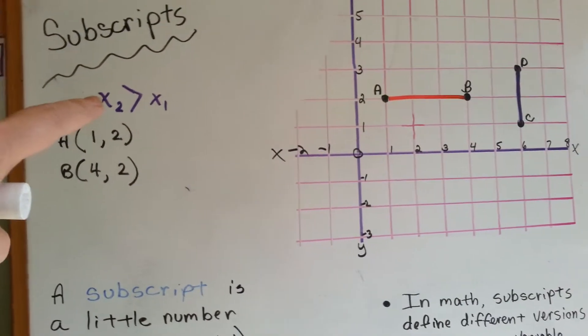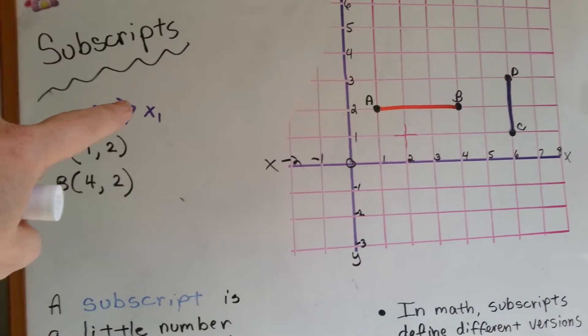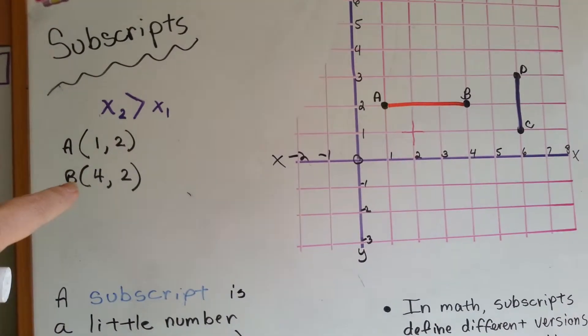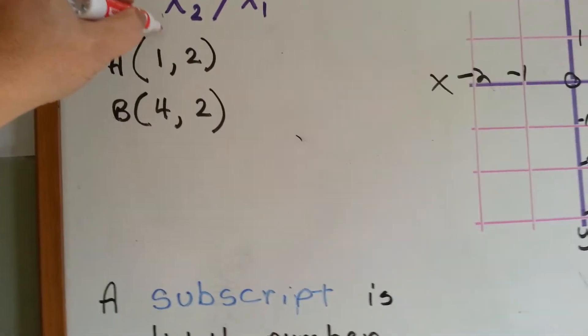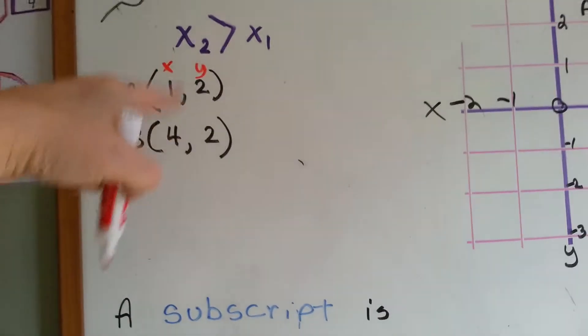We've got that the x, the second x-coordinate is larger than the first one. Okay, see? Remember, this is the x-coordinate and these are the y's. Okay.